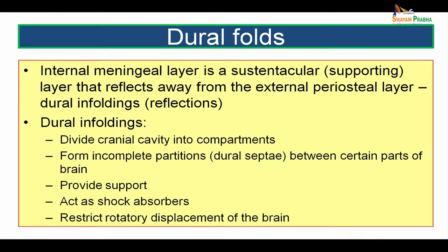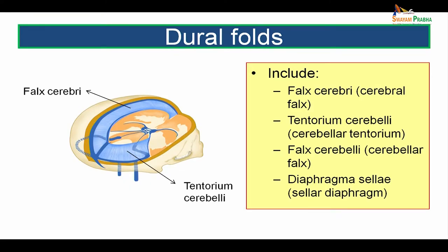There are four named dural folds: falx cerebri or the cerebral falx, tentorium cerebelli or cerebellar tentorium, falx cerebelli or cerebellar falx, and diaphragma sellae or the sellar diaphragm. This picture shows us the falx cerebri, which is a large sickle-shaped dural fold, and the tent-shaped tentorium cerebelli placed transversely.